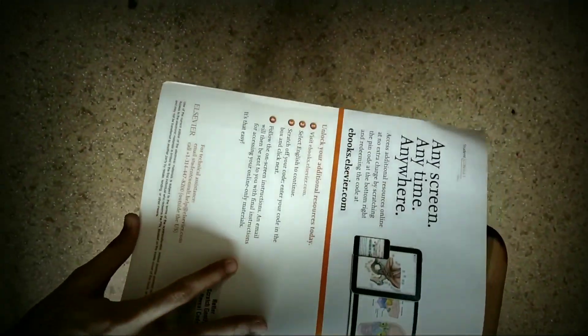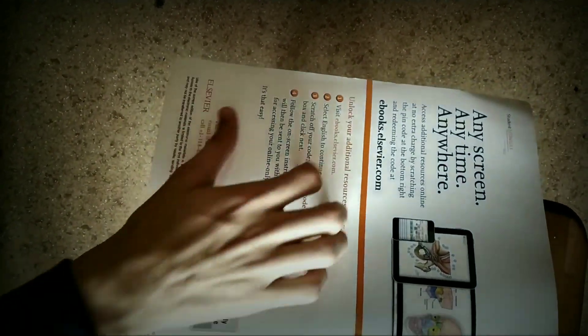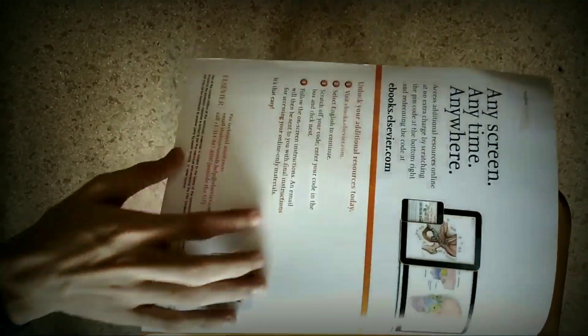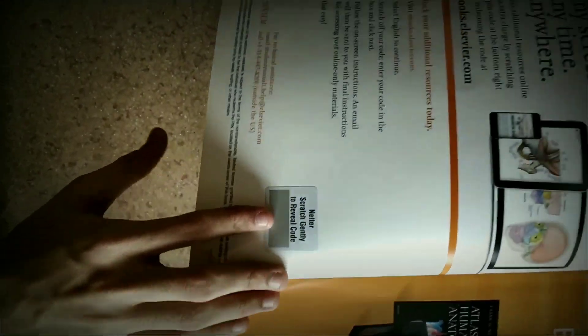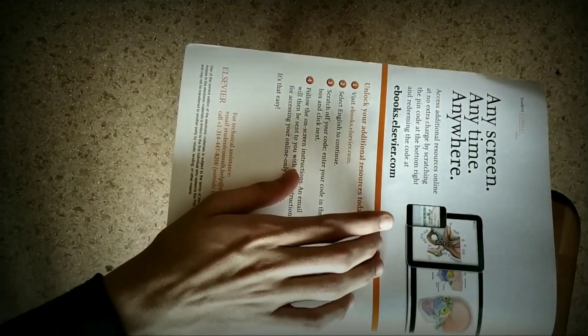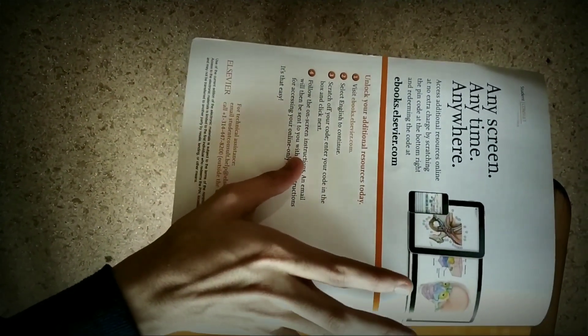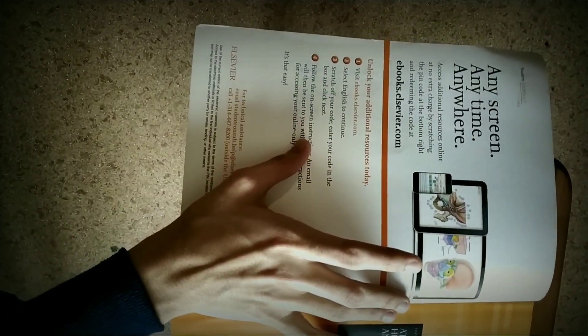And in this book you can have access to additional resources online at no extra charge by just scratching the card. Here it is, Netter's scratch card. You can gently scratch it and you can avail all the videos and photos of this human anatomy on your tablet and your mobile phone.